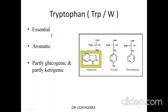The other essential amino acids can be remembered by the mnemonic PVT TIM HaLL: phenylalanine, valine, tryptophan, threonine, isoleucine, methionine, histidine, leucine, and lysine. Histidine and arginine are semi-essential amino acids.